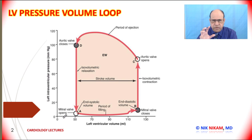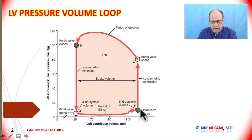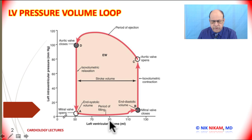During isovolumic contraction, the mitral valve is closed and the aortic valve is closed. As a result, the ventricle is a closed cavity, and we simply have an increase in pressure with no change in ventricular volume.